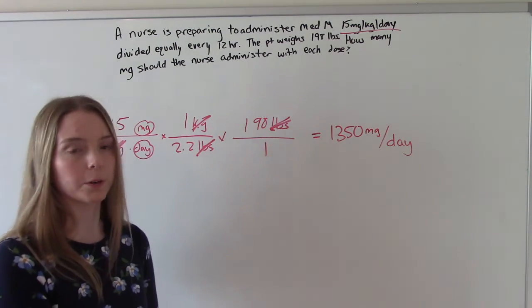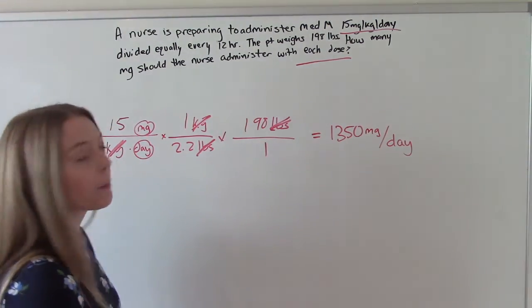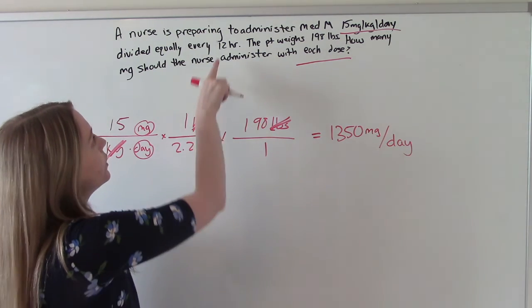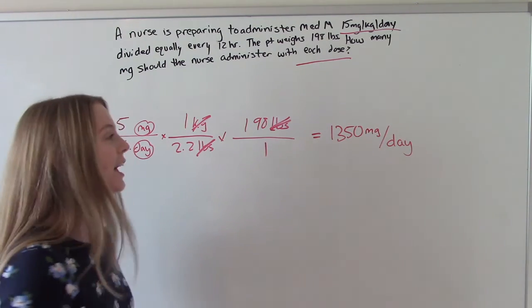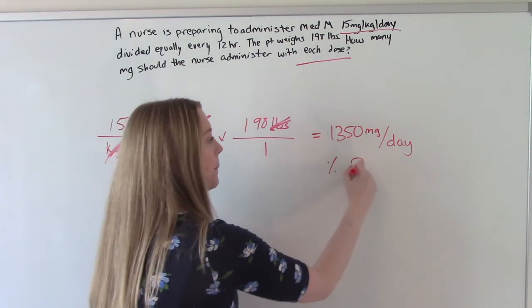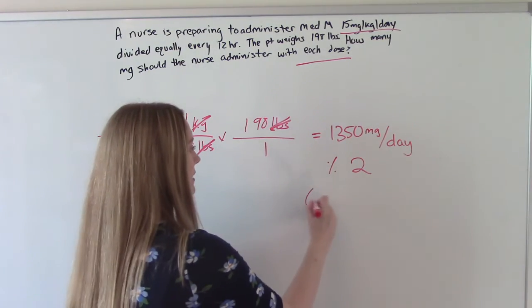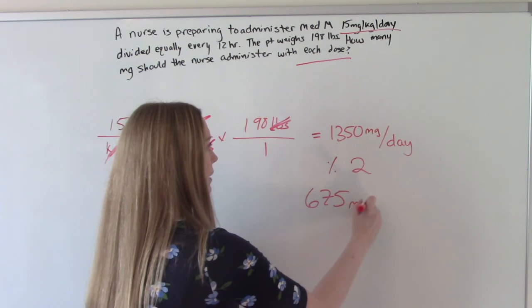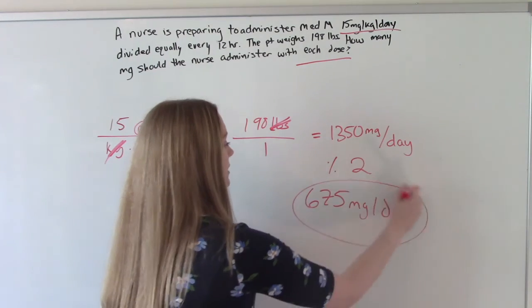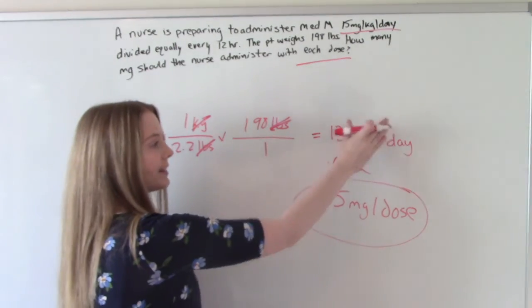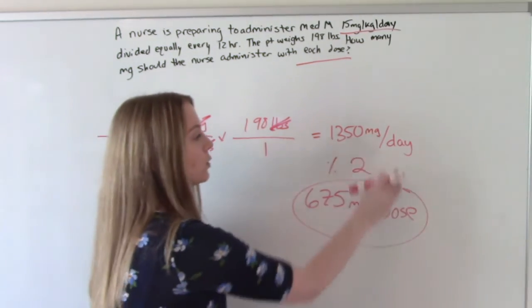And now we need to go one step further because this isn't about the day, it's about each dose. How many doses are we going to give in this day? Two, because it's every 12 hours and there's 24 hours in a day. So we're going to divide this by 2, and that gets us 675 milligrams per dose. So this is our answer. This is helping us get to our answer, but this is what the question is asking for. It's asking per dose, not per day.